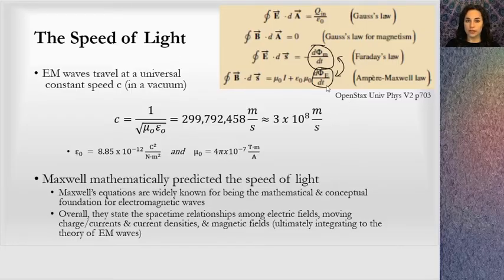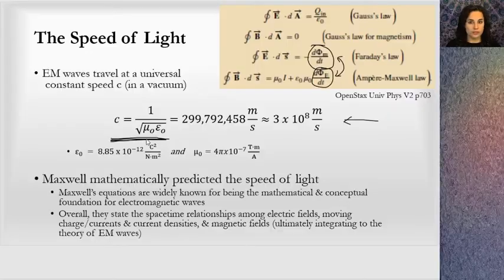It turns out if you do a very nice integral, you can derive the speed of light from these equations. And that's the speed of light. And there's this nice relationship here. We're relating it to magnetic fields and electric fields. And you can see that in the equation.